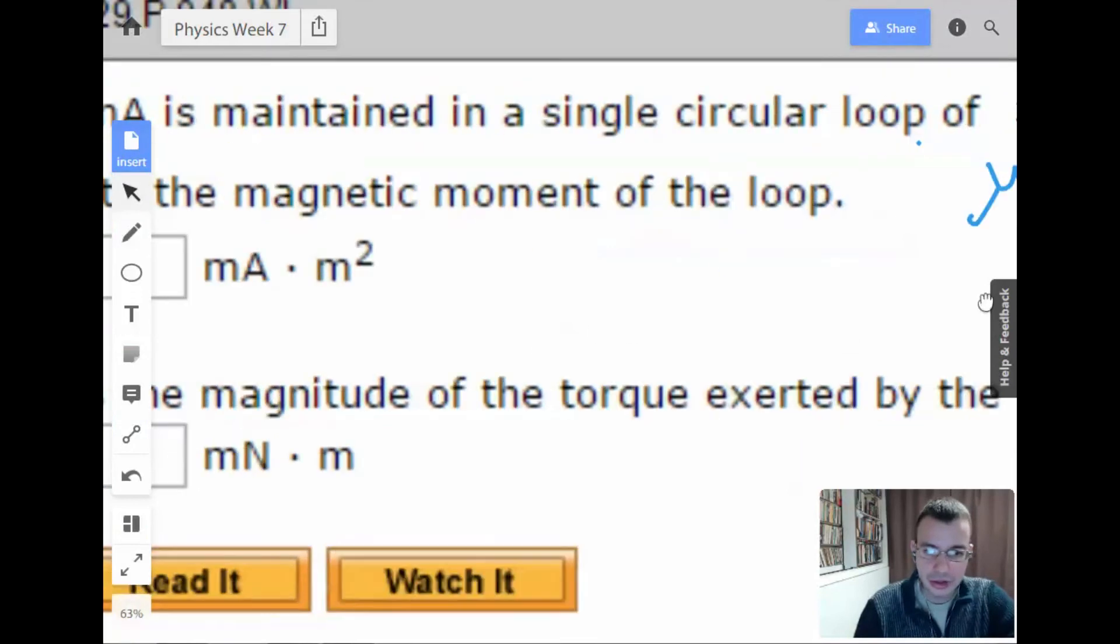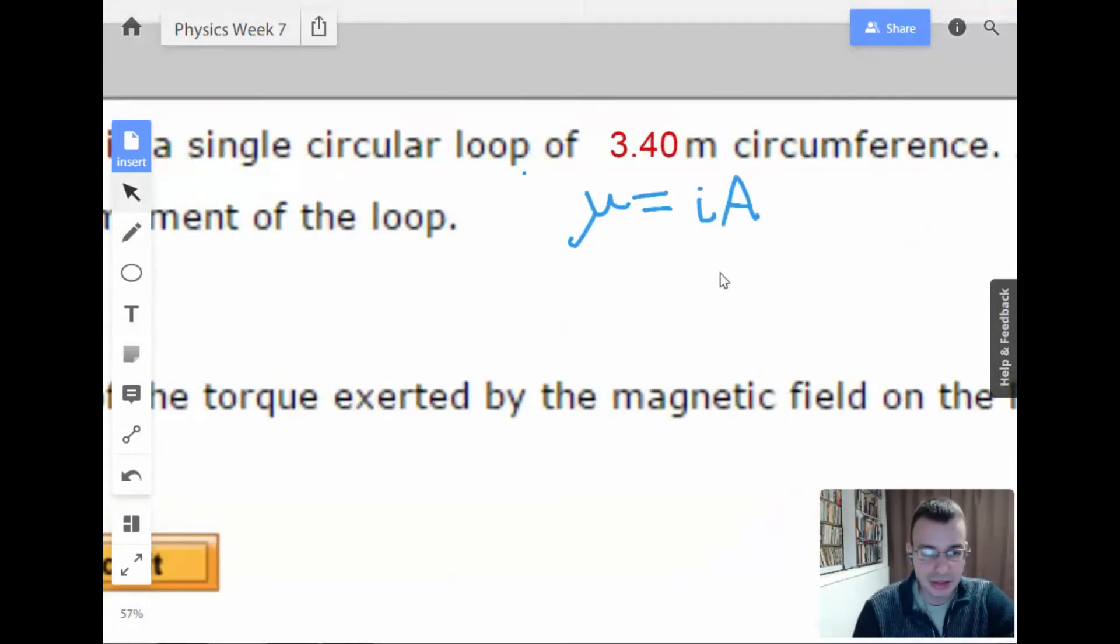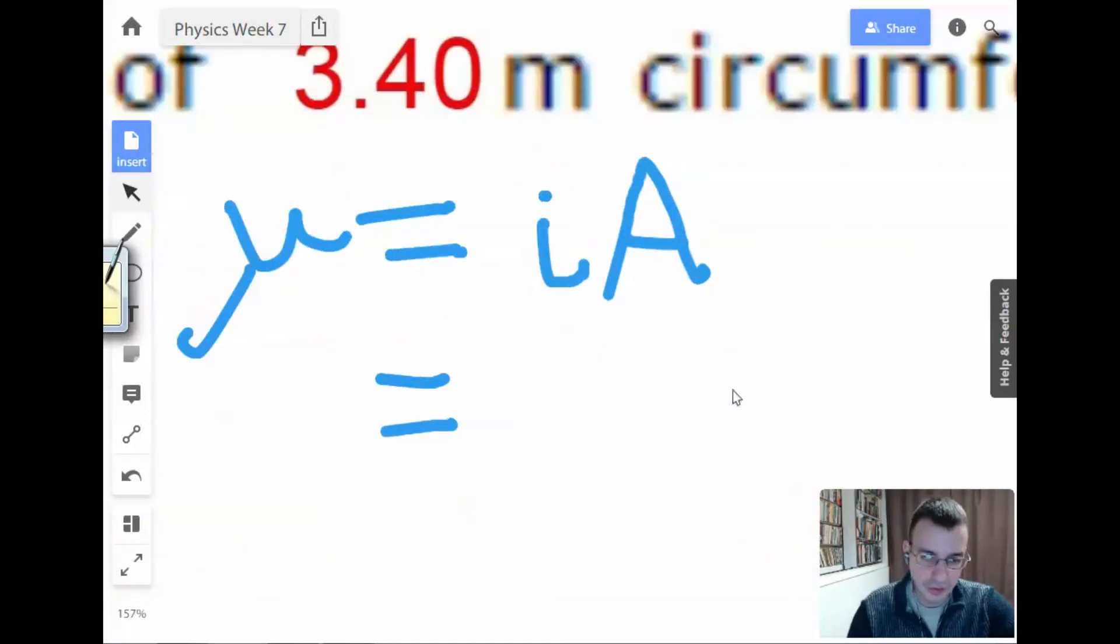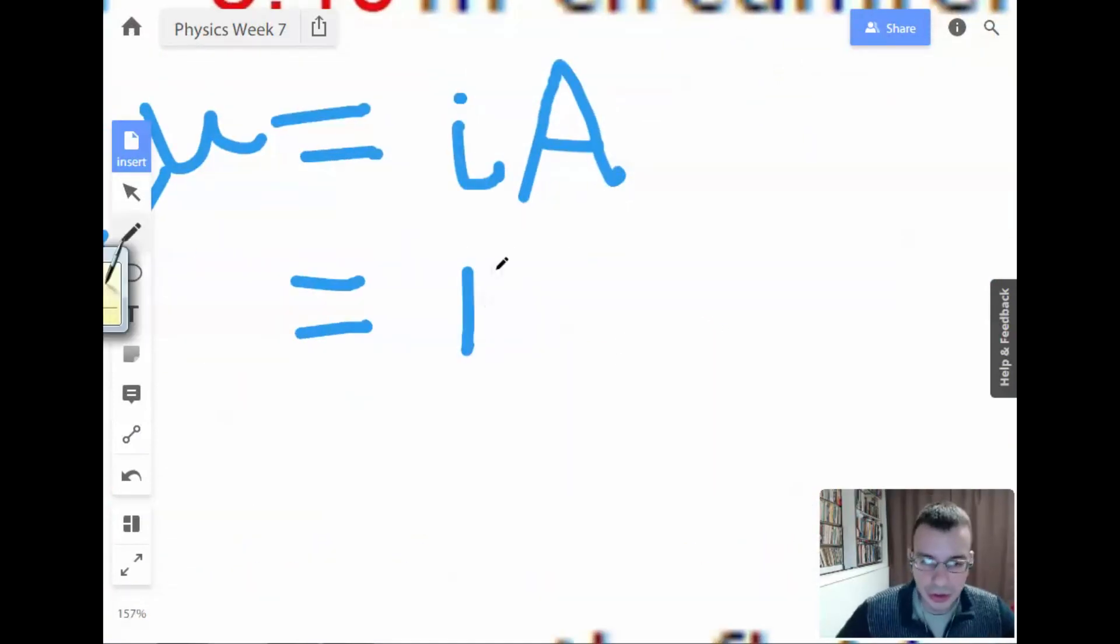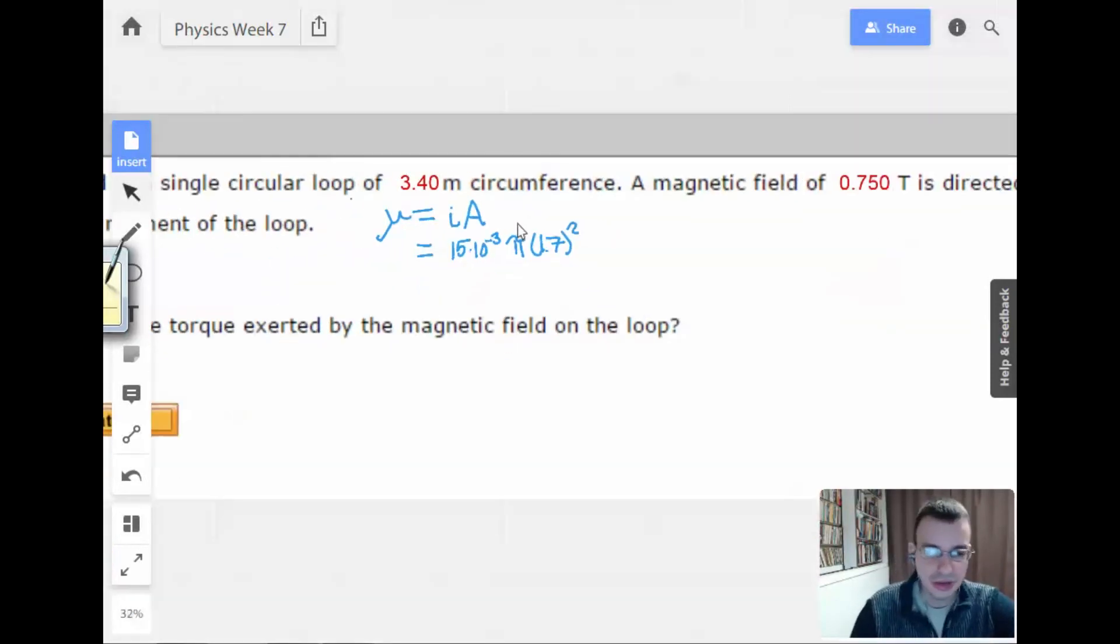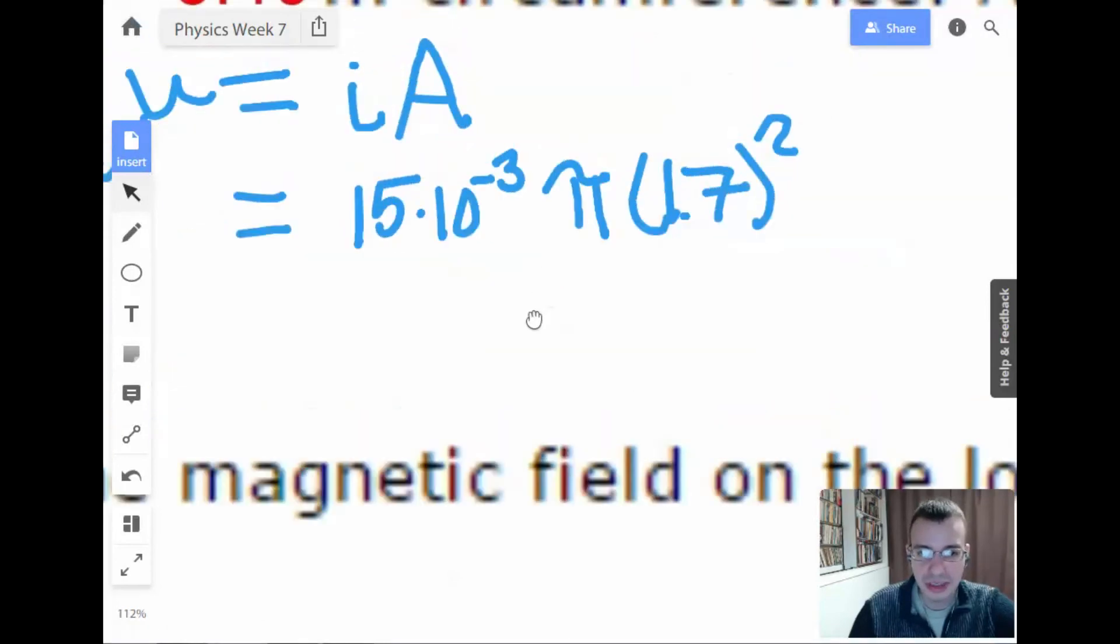Alright, so calculate the magnetic moment. Okay, that's crazy easy. So this is going to be 15 milliamps, which equals 15 times 10 to the negative third. Okay, excellent. And then we have a circumference of 3.4. Half of 3.4 is 1.7. So I'm going to say pi r squared. So pi times 1.7 squared. I think that's all we do for the first part. That's almost kind of a let down.